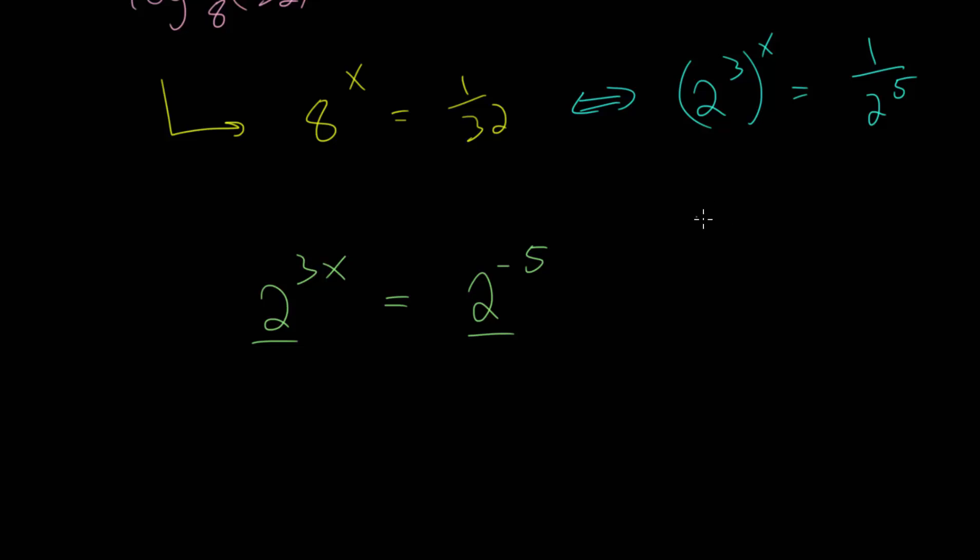Since if we have, let's say, d to the e power, and this is equal to d to the f power, then for this to be true, e and f must be equal. So let's set 3x equal to negative 5 and divide by 3. We get that x is minus 5 thirds. So this right here should be our final answer.